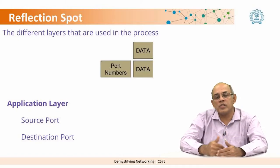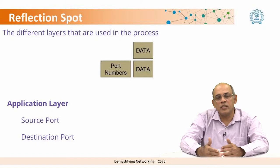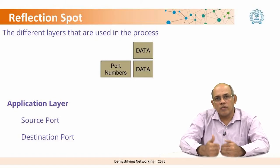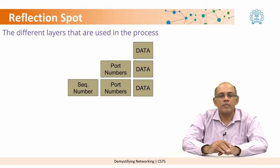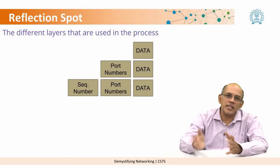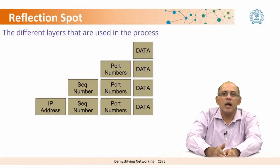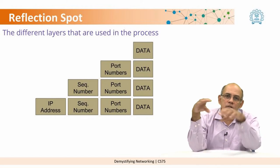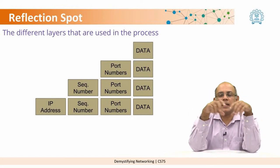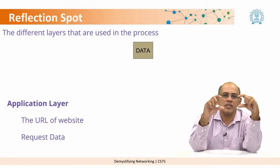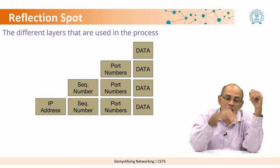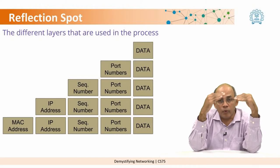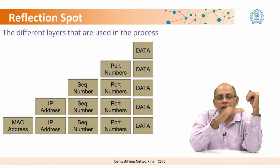For example, if it is your browser which is making an application request to a search engine, you know the source port which is HTTP and you know the destination which is the web server. At the next level, the domain names are translated into IP addresses by a domain name lookup, followed by adding the IP addresses into the packet. You can think of the packet as growing along — it starts with just the data, then there are the application ports, then the IP addresses are attached, then sequence numbers are attached, and once it comes down to the MAC level, the MAC address is also updated at every routing point.